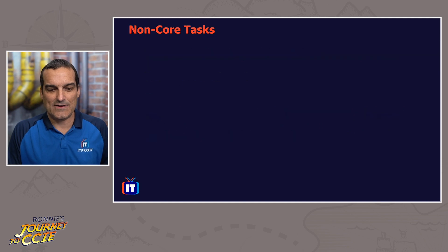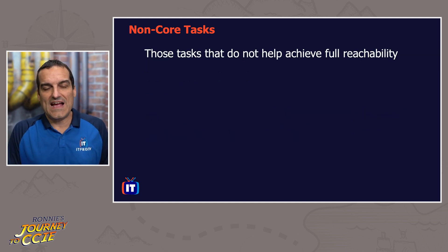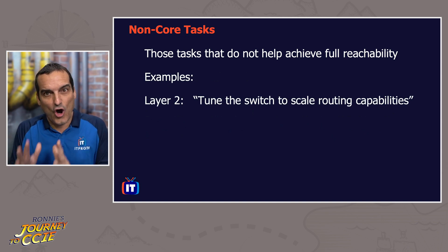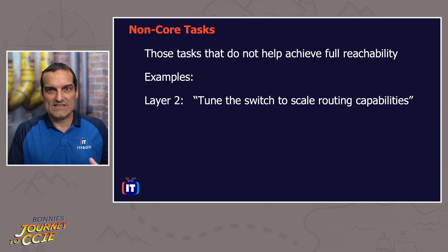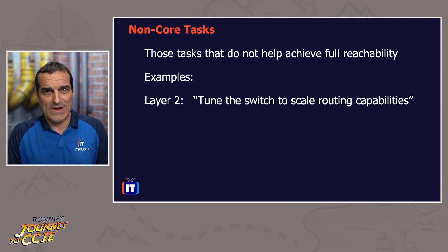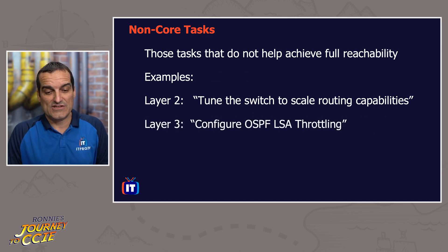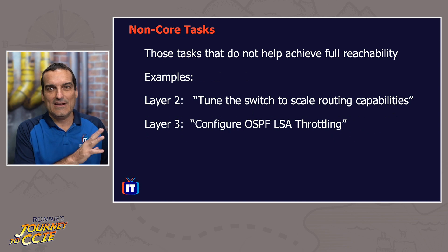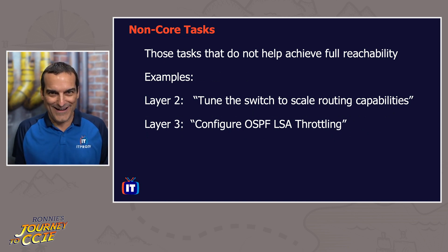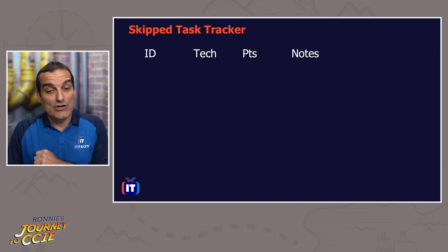Non-core tasks are those that don't help you achieve full reachability. You can skip these and all you will lose is those couple of points. A layer two example: tuning the switch to scale routing capabilities — this refers to the SDM template, where you allocate resources for routing. Doing it or not does not affect anything else; you'll just miss those points. Another example: configuring OSPF LSA throttling in the OSPF environment. If you do it successfully you get those points; if you don't, you don't lose any surrounding points.